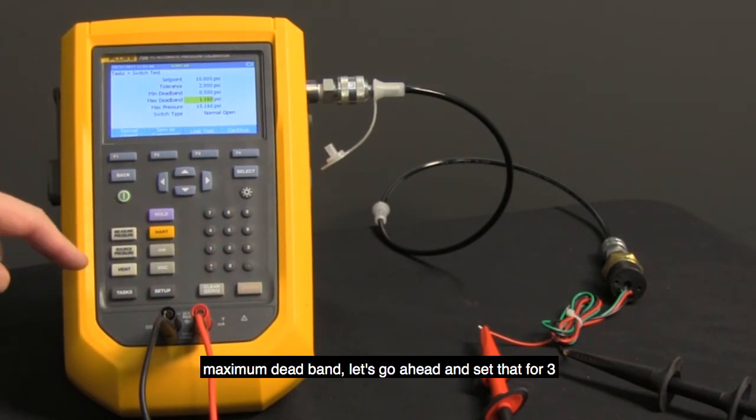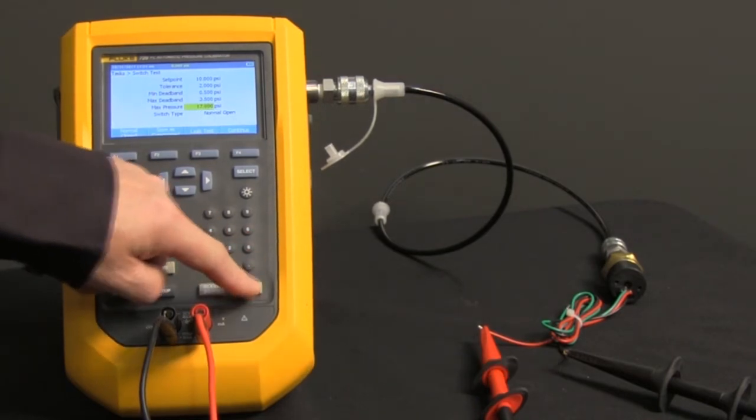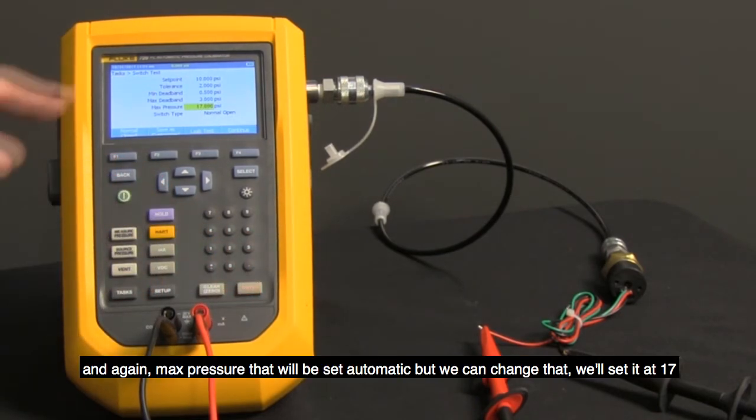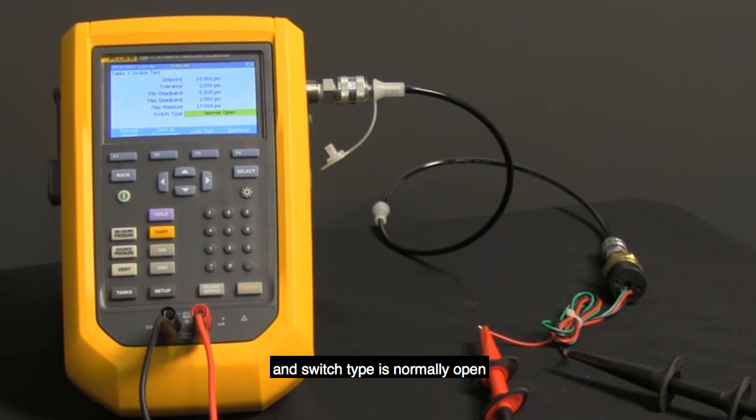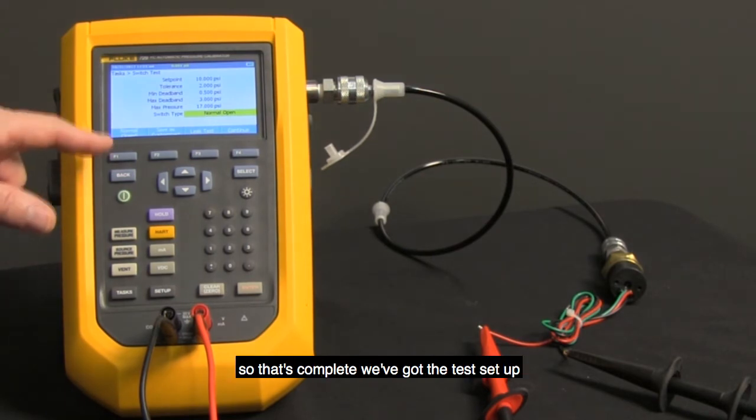Maximum deadband, let's go ahead and set that for 3. And again, max pressure, that will be set automatic. We can change that, but we'll leave it at 17. And switch type is normally open. So that's complete.